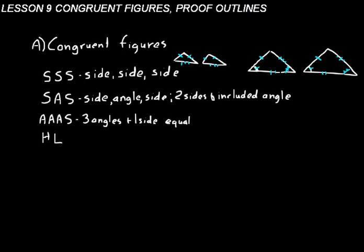A third postulate is called the angle, angle, side postulate. In this one, the three angles of the two triangles plus one side have to be equal. If you have that, then you have a congruent pair of triangles.